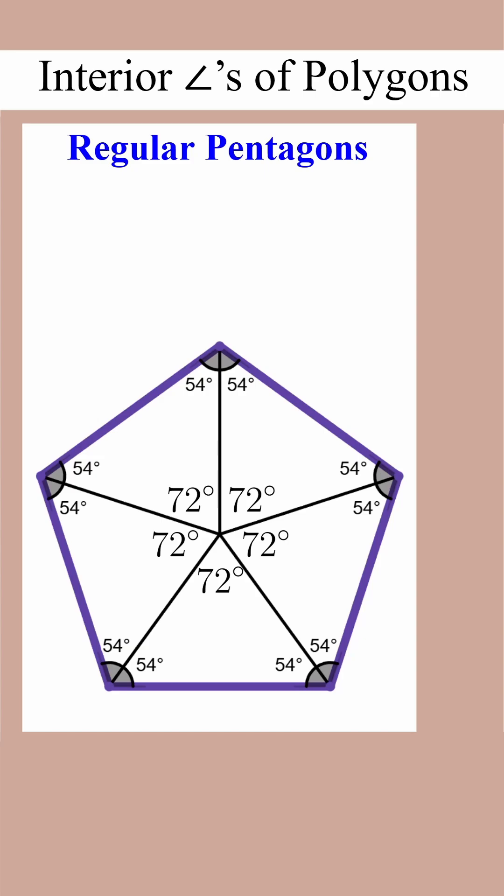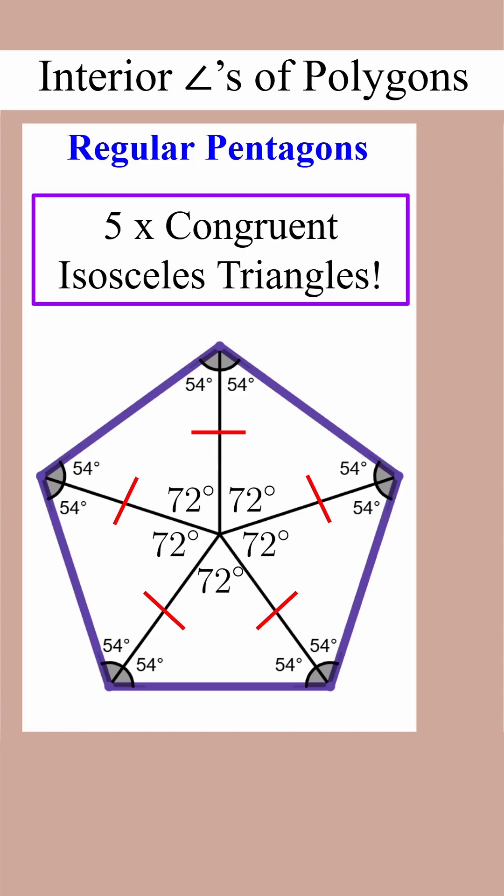By the base angles theorem, the sides across from 54 degrees are equal, so these are all isosceles triangles. Pentagons are made up of five congruent isosceles triangles. Really important to note that those sides I marked in red are not equal to the side length.